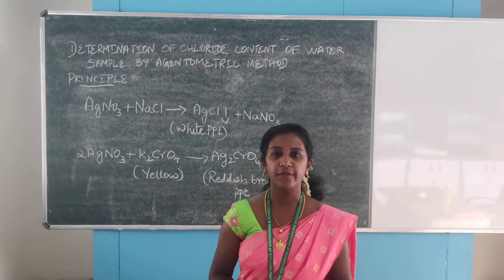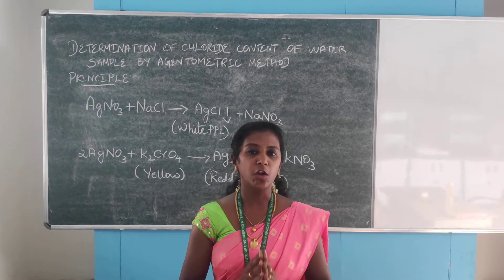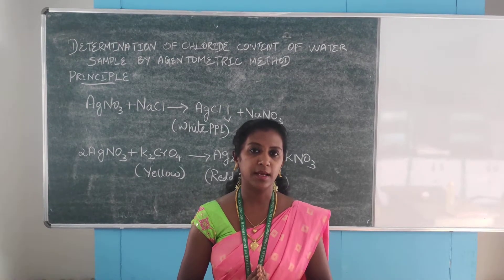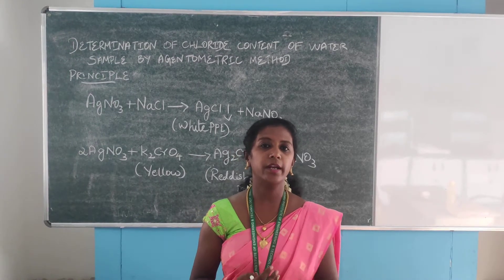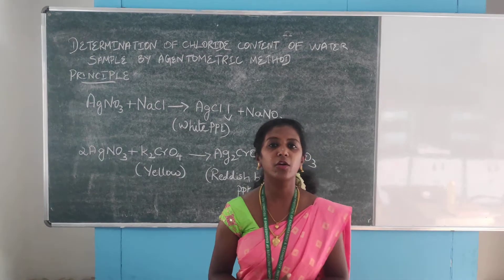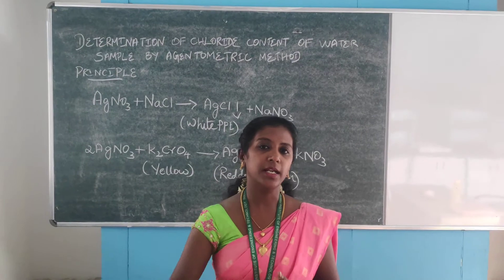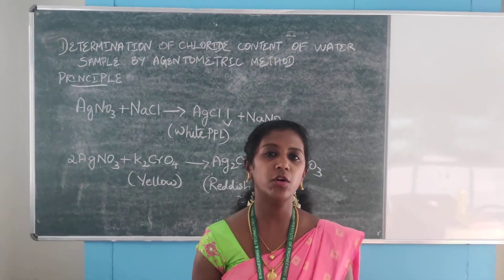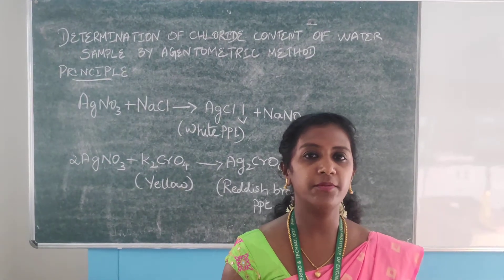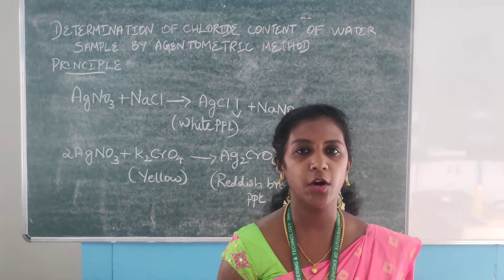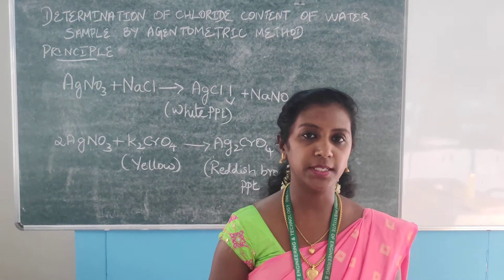We are going to find out the level of chloride ions present in the water sample. Normally municipal water contains a lot of chloride ions. When chloride ions are present in excess in the water sample, we cannot use that water for drinking purpose. Also in industrial sectors, more chloride ions present in the water sample may lead to boiler corrosion or other disadvantages.